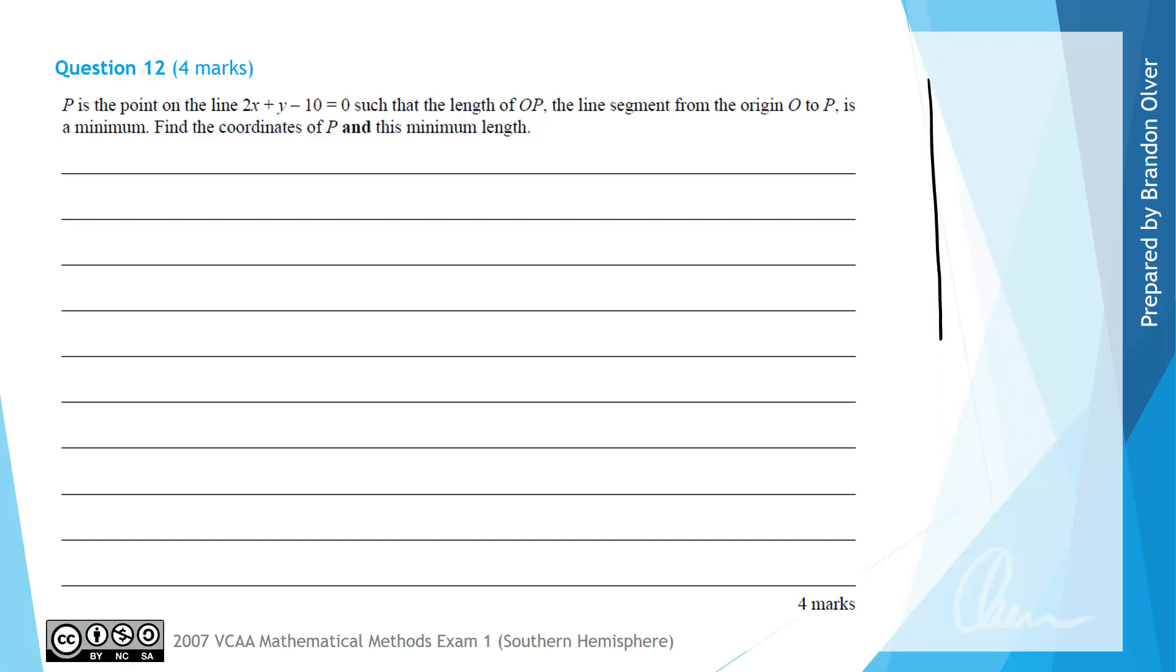So the first thing we are going to do is just have a sketch of what's going on in this situation. So here's my axes x and y. And if we were to rearrange the equation 2x plus y minus 10 equals 0, we'd find that y equals minus 2x plus 10.